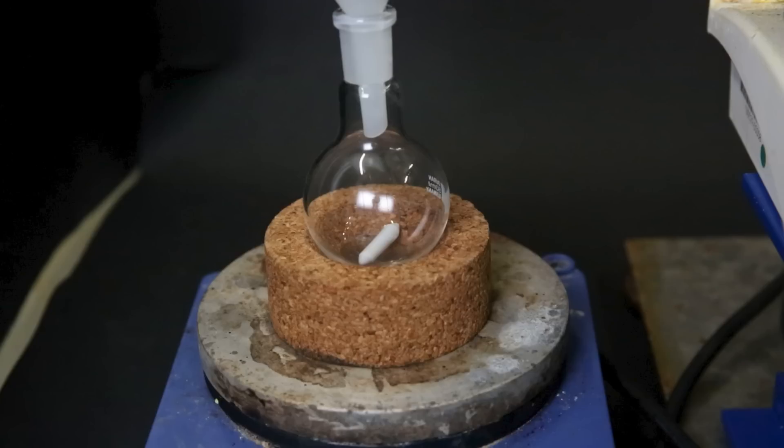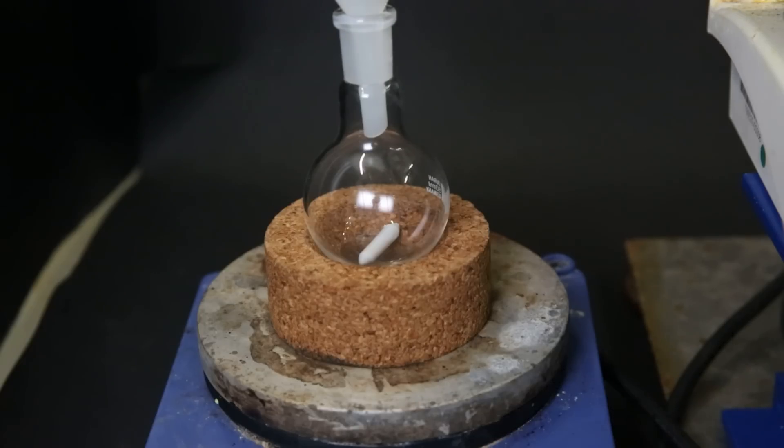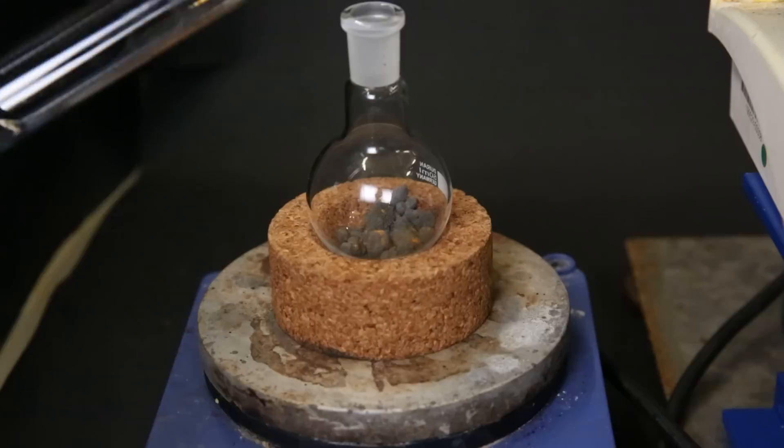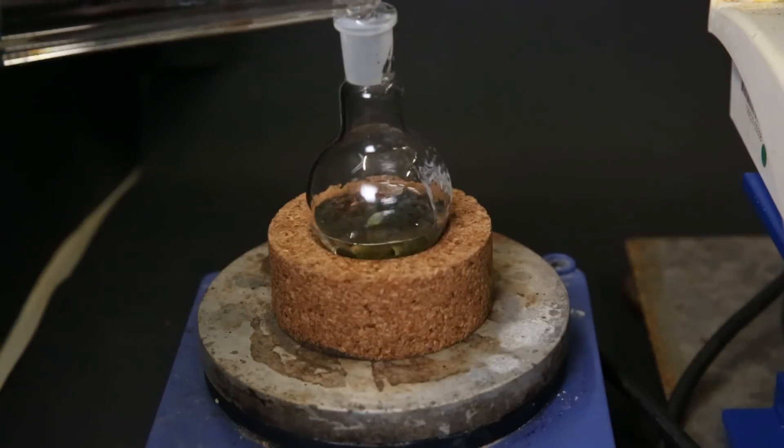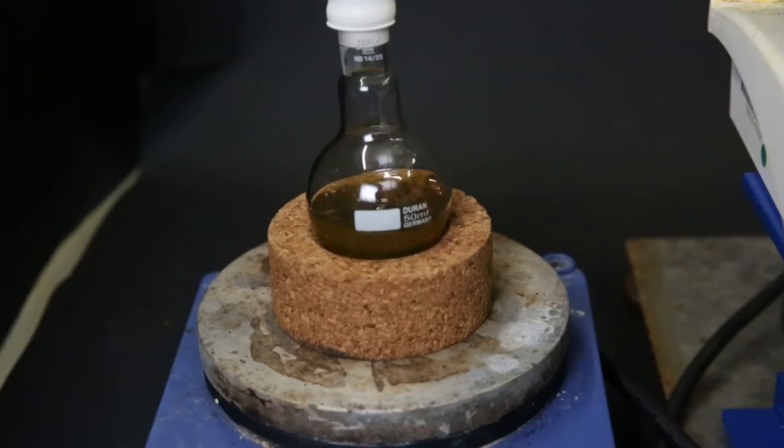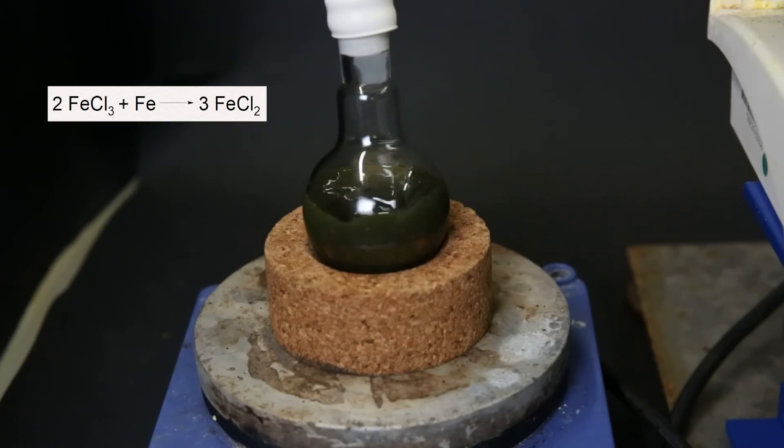So to make ferrocene, I need iron(II) chloride, but iron(II) chloride is quite unstable and oxidizes in air to iron(III) chloride. So to get around this, I will prepare iron(II) chloride in situ by mixing it with iron powder. So I add a mixture of iron powder and iron(III) chloride hexahydrate to a flask, and add 20 milliliters of degassed DMSO. While stirring, the iron(III) chloride will get reduced to iron(II) chloride, and the iron will also form iron(II) chloride, according to the reaction shown.